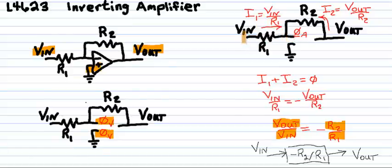If V in exists on this side of the equation and zero volts on the other, then the voltage across this resistor is V in. And therefore the current I one flowing through this resistor is V in divided by R one.